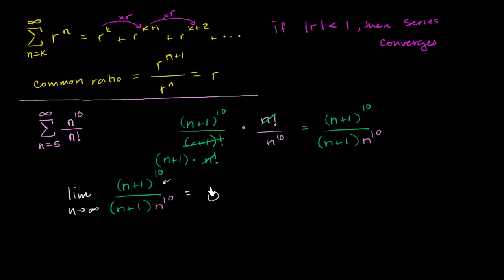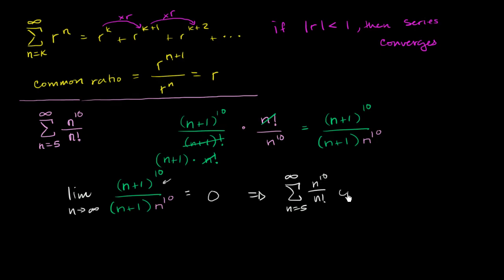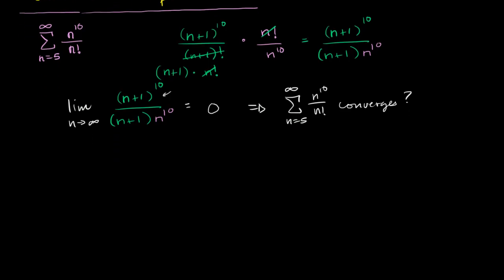Using the logic from the common ratio of geometric series — this is clearly not a geometric series, but as n gets really large the ratio between consecutive terms gets smaller and smaller — maybe we can make the same conclusion that the series actually converges. And the answer is yes, we can. What allows us to do it is the ratio test.